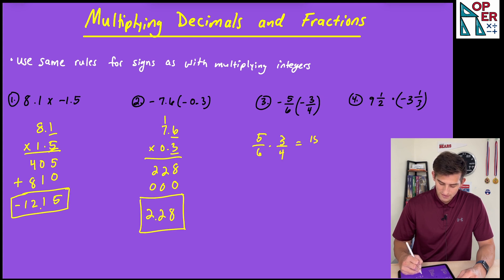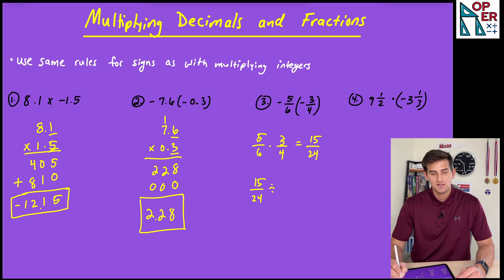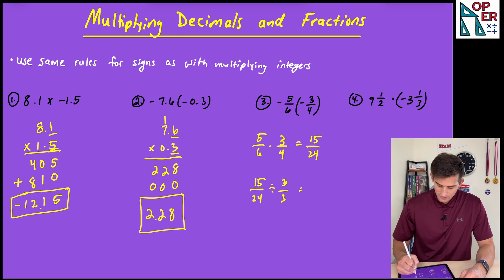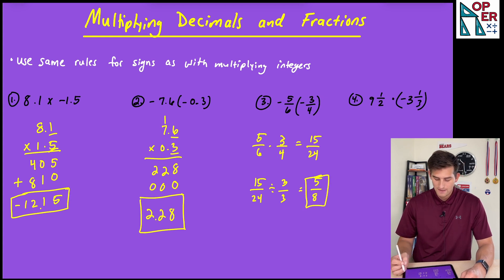5 times 3 would be 15 and 6 times 4 would be 24. Now we have 15 over 24 and 15 and 24 would both be divisible by 3. So divide by 3 over 3. So that is going to give me 5 over 8 for number 3. And once again, we said our answer should be positive.